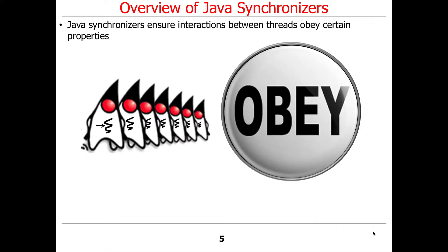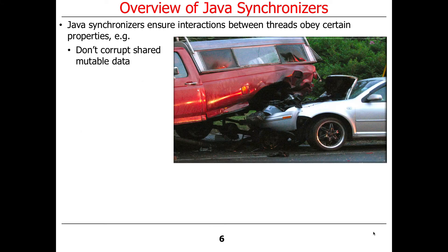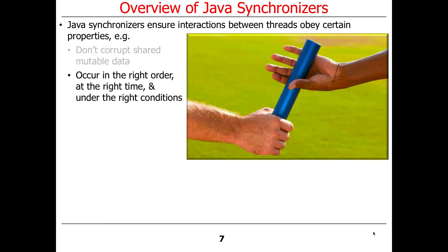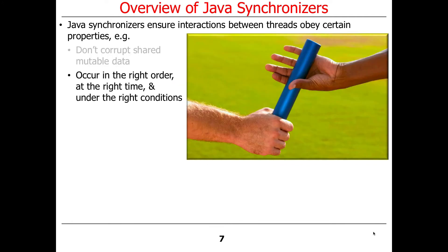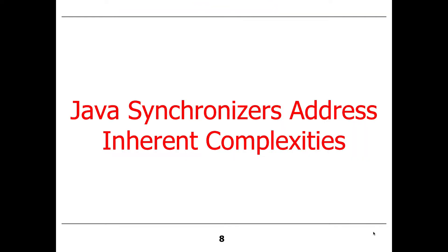Synchronizers in Java are used to ensure that threads obey certain properties. One of the key ones is: don't corrupt shared mutable data. If you don't obey that property, you'll end up with race conditions. Another thing they ensure is that threads execute in the right order, at the right time, and under the right conditions. Those are all somewhat different.